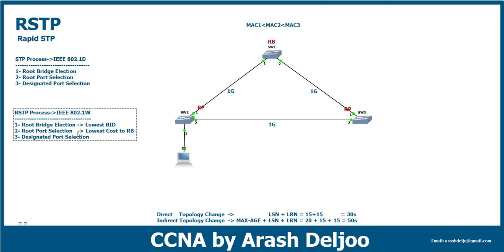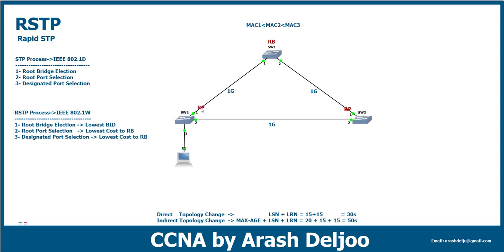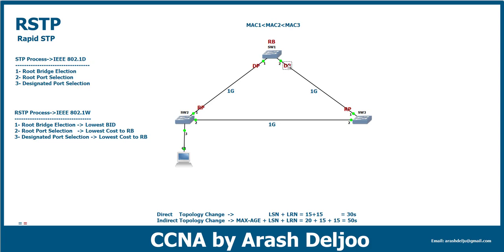Finally, we select designated ports — again with the same rule as before: lowest cost to the root bridge. For example, in the link between switch 1 and switch 2, port 1 of switch 1 (the root bridge) is the designated port. Port 2 is the designated port between switch 1 and switch 3, and port 2 of switch 2 is the designated port between switch 2 and switch 3. Here we have an alternate port.